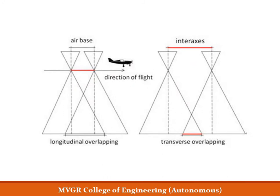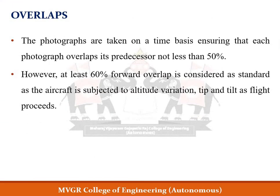Another important definition from this diagram: air base is the distance between two consecutive exposures. The longitudinal overlap is the common area captured in both photographs. Forward overlap is decided based on the flight plan — as the flight proceeds, due to altitude variations, tip, and tilt causing vertical or horizontal distortion, we generally fix around 50 to 60 percent overlap to ensure continuous, uninterrupted photographs.